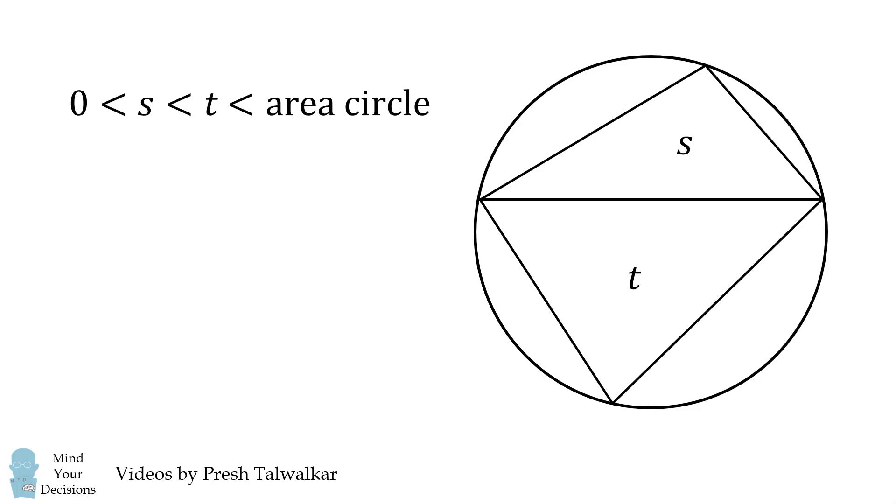We also know t is less than the area of the circle. However, there's no bound on the area of the circle because we don't know its radius. So what other relationship is there between s and t? Well, that's the tricky part about this problem. There is no other relationship. The geometry setup is a big distraction.